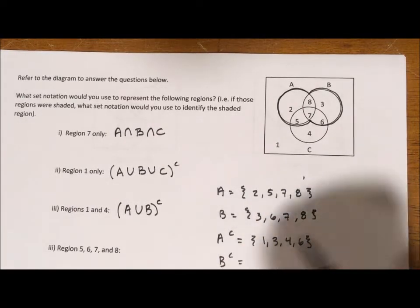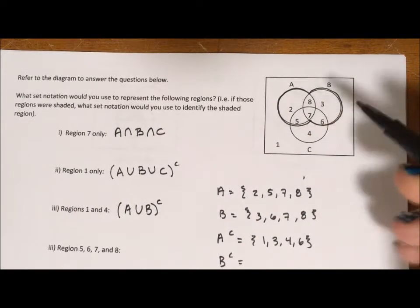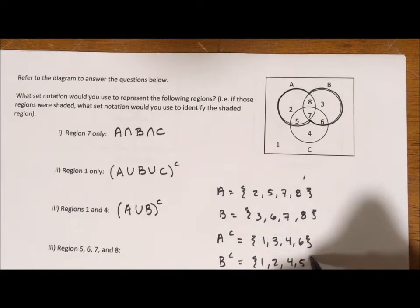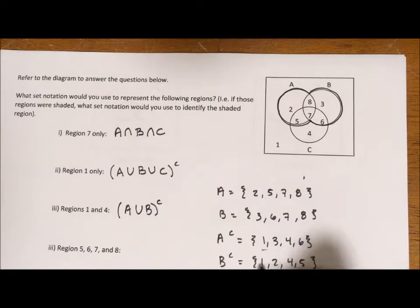1, 3, 4, and 6. And the complement of B is going to be 1, 2, 4, and 5. And I'm looking for 1 and 4.